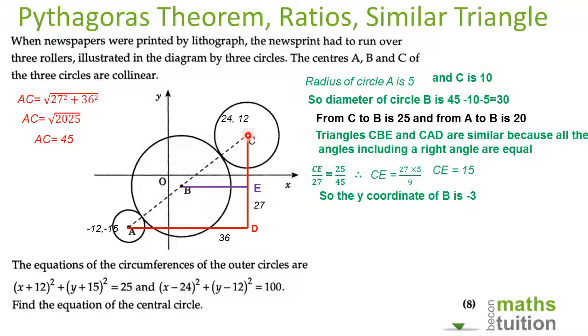So CE is 15. Now from the center of circle C to the x-axis is 12, and from the x-axis to the center of circle B has to be 3. Because we're below the x-axis, the y-coordinate of circle B is -3.